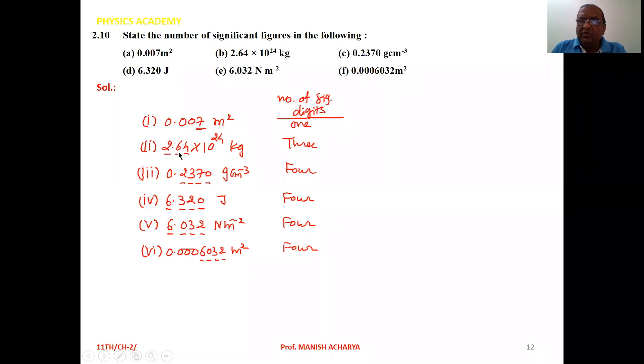Then second one, 2.64 × 10²⁴. So 10 to power something, these terms are not considered in the significant digits. So only this one, 2.64. So number of significant digits, that is 3.